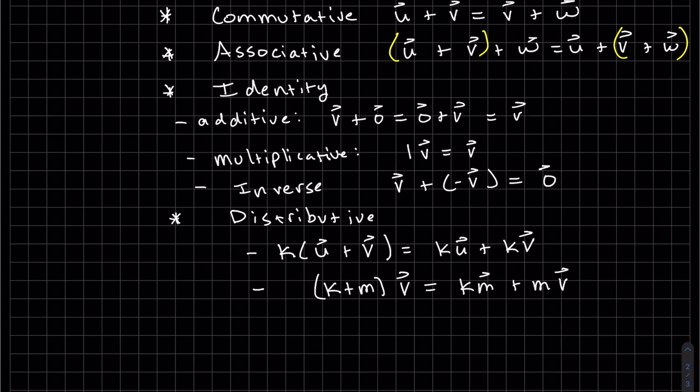We have a distributive. We can distribute a constant to two vectors, or we can distribute a vector to two constants, but you can never distribute a vector to a vector.